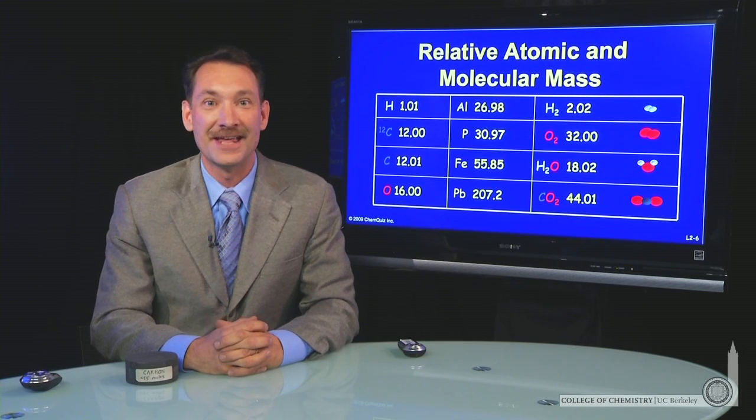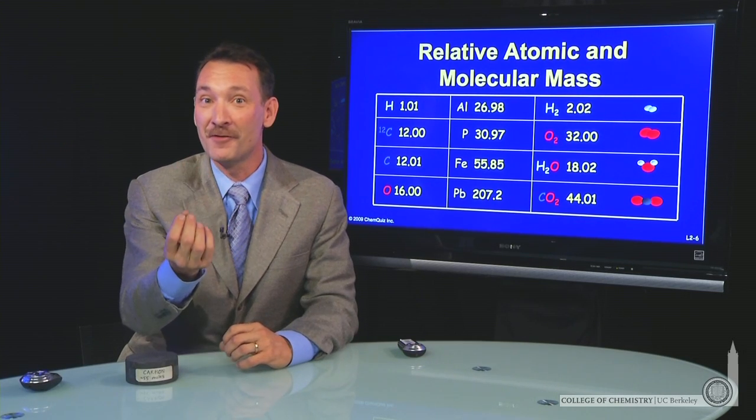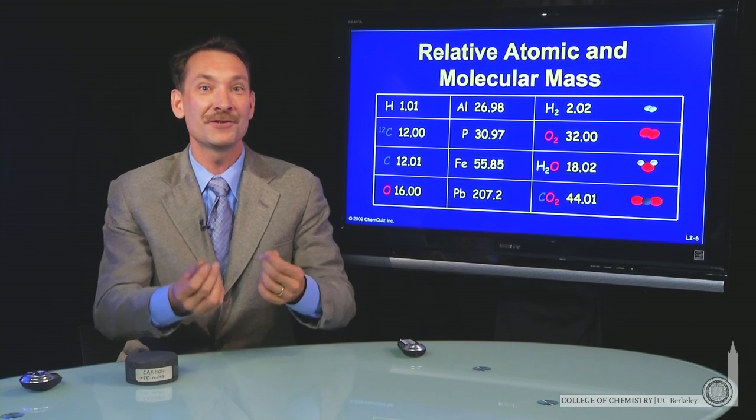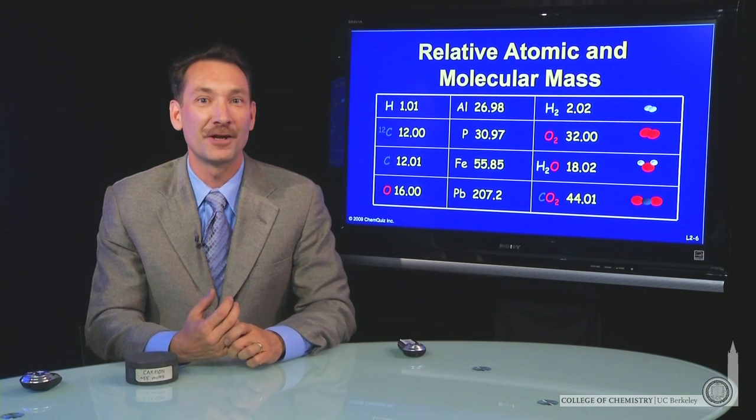Now that we know about isotopes, that is, elements with the same number of protons but a different number of neutrons in the nucleus, it's interesting to look back at our table of relative atomic masses.